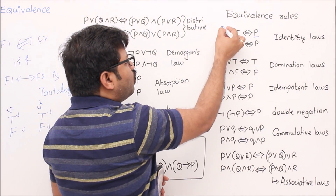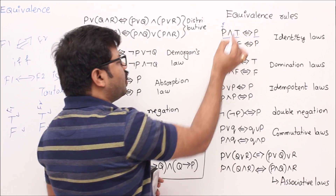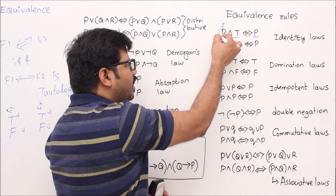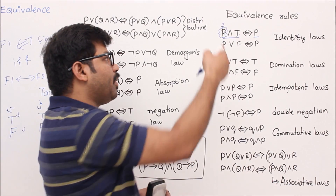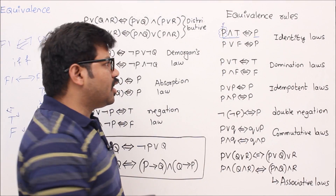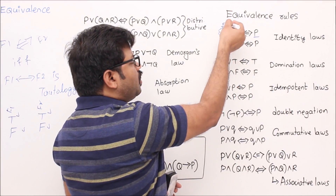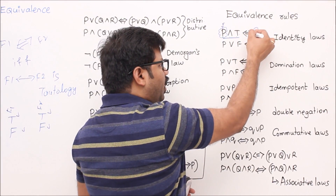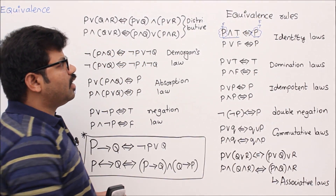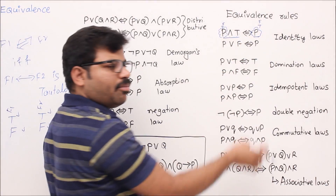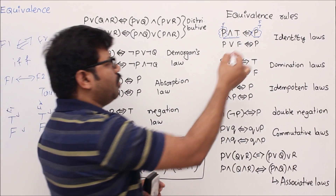Whenever p is true, true∧true is true. Whenever p is false, false∧true is false. This entire formula is just depending on p — it responds based on p's value. When p is true the overall result is true, when p is false the overall result is false. Both formulas behave the same: left is true when right is true, left is false when right is false.